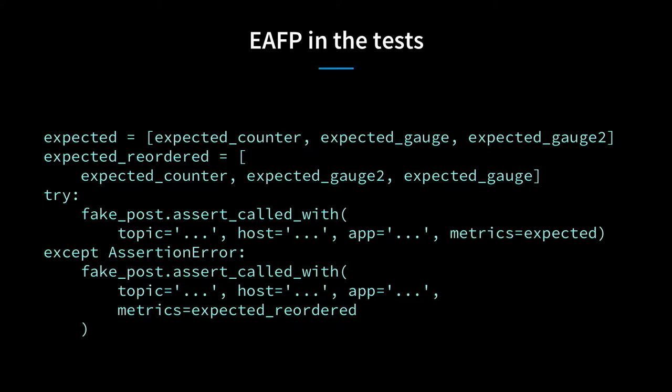Another example where EAFP is useful is in tests. Sometimes you can't control whether certain sets are returned in one or another order. You have one case where `expected` is a certain order of metrics and another `reordered` is the other situation. You can use a try block—try matching with one expected order, and if you get an AssertionError, try matching with another. One of them will succeed if your test is good. Otherwise if something is really wrong, both of them will fail and your test will still show that.